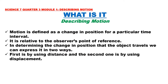Describing motion: Motion is defined as a change in position for a particular time interval. It is relative to the observer's point of reference. In determining the change in position that an object travels, we can express it in two ways: first, by using distance, and second, by using displacement.